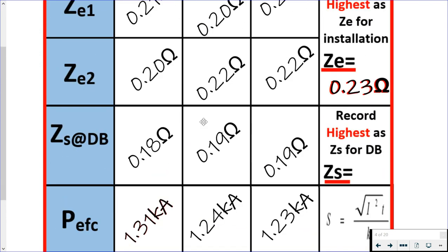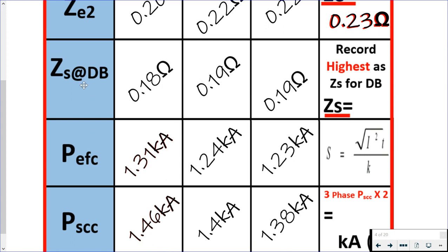We've then moved on after we've reconnected our earthing conductor and carried out our earth fault loop impedance at the DB and our prospective earth fault current. Depending on your meter, it may just show both values or you may have to have a function button to switch between the values, but it's the one test. For the earth fault loop impedance at the DB, our highest value that we've obtained here is 0.19, and that's what we would record on our test result sheets as the Zs at DB.